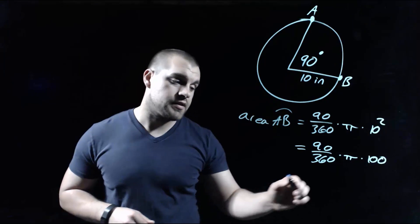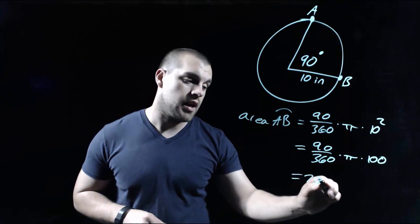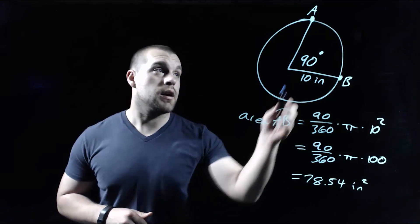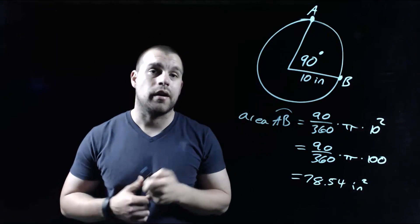When we type all of this into our calculator, we should get about 78.54 inches squared as the area of this sector cut off by that arc AB.